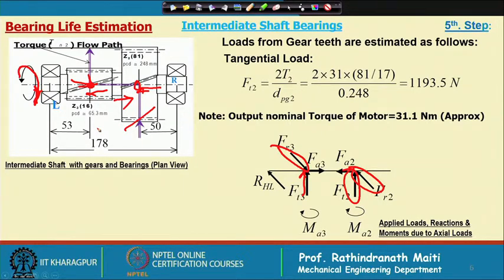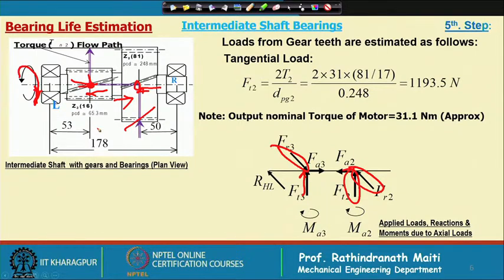This means that the axial loads from gear and pinion will try to cancel each other, so the resultant axial force will be less. That is why you will find that in gearboxes, on the intermediate shaft, the direction of helix of the gears are the same.